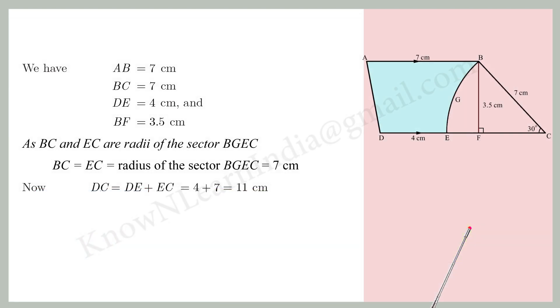It is given in the question: AB equals 7 cm, BC equals 7 cm, DE equals 4 cm, and BF equals 3.5 cm.